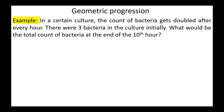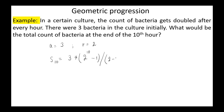As an example: in a cell culture, the count of bacteria doubles after every hour. There are 3 bacteria in the culture initially. What would be the total count of bacteria at the end of the 10th hour? The bacteria form a geometric progression with first term a = 3 and common ratio r = 2. So S_10 = 3·(2^10 − 1)/(2 − 1) = 3·(1024 − 1)/1 = 3·1023 = 3069 bacteria.